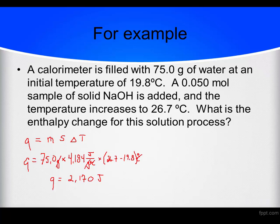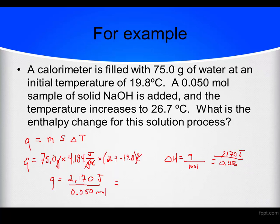Because they told me the number of moles, all I have to do now is take my joules and divide by the moles. Delta H is equal to Q over moles. So I'm going to do 2170 joules divided by 0.050 moles. I'm getting 43,400 joules per mole.